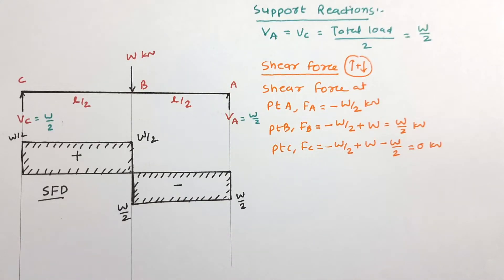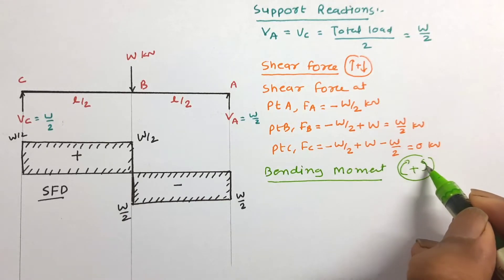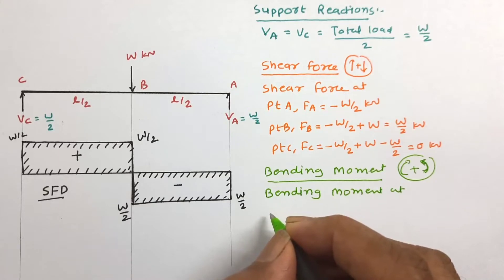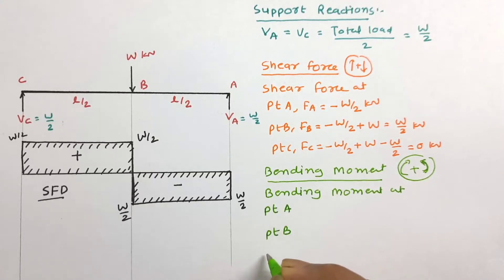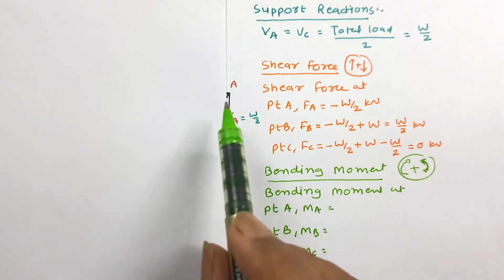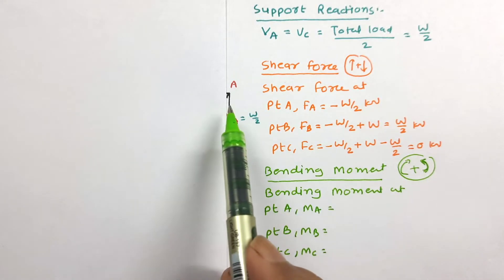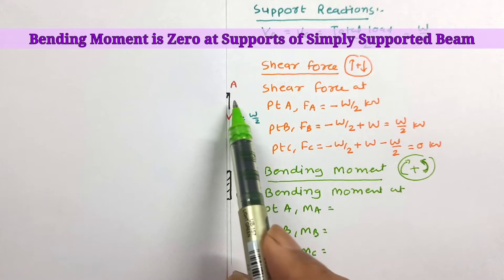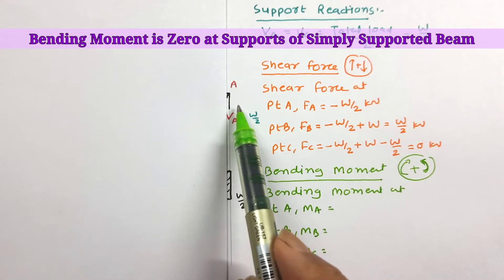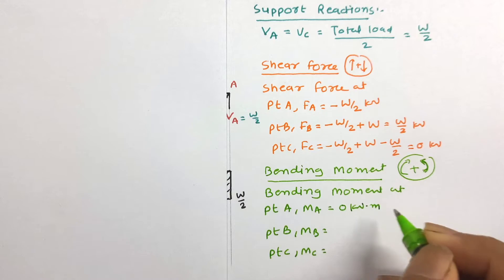Let us now work out the bending moment to draw the bending moment diagram. This is the sign convention for the bending moment diagram. We work out bending moment at all three important points A, B, and C. Starting from the right hand side, anticlockwise moment is positive. At point A, there is no load on the right hand side, and Va acting at A creates no moment. For a simply supported beam, there is no moment at the support, so bending moment at A is 0 kN·m.